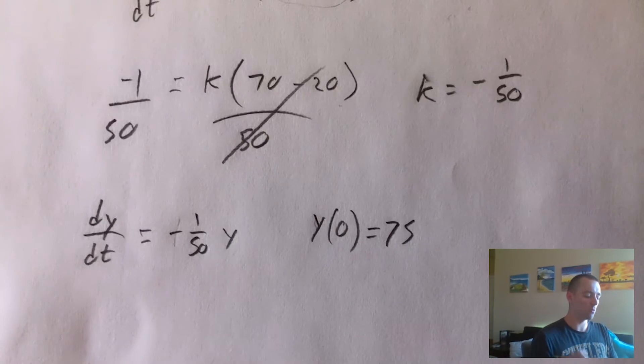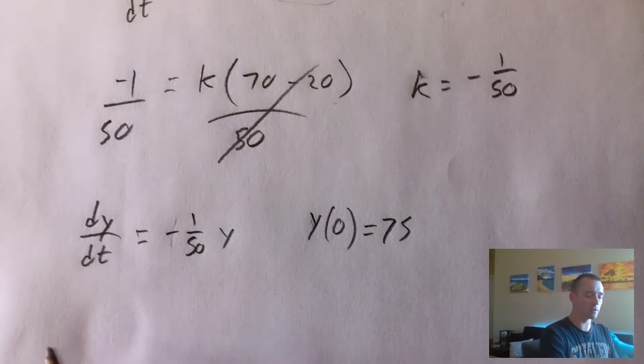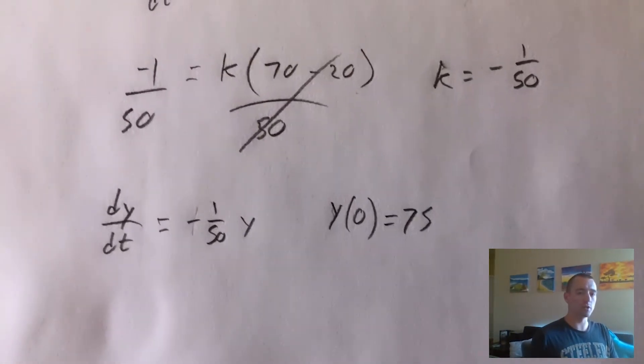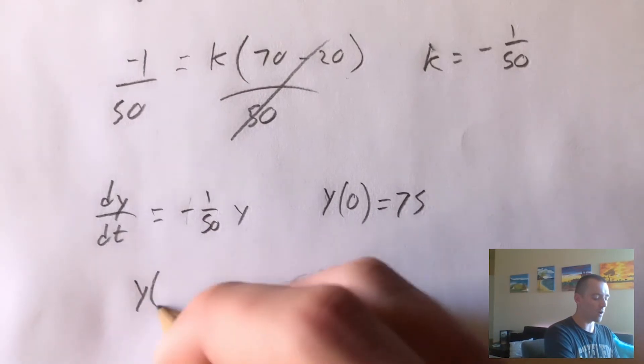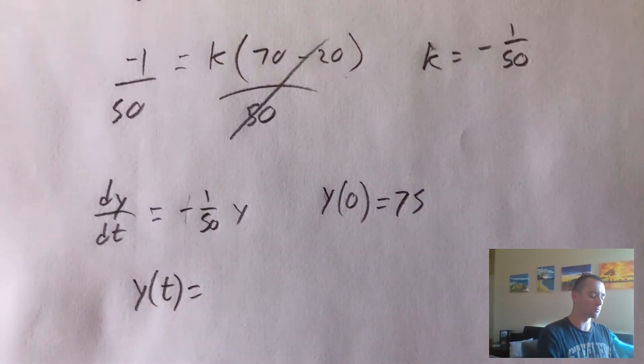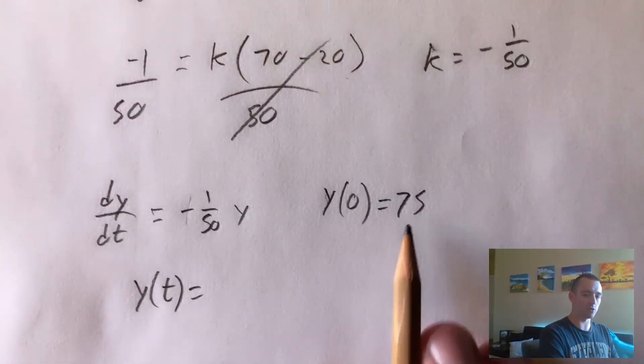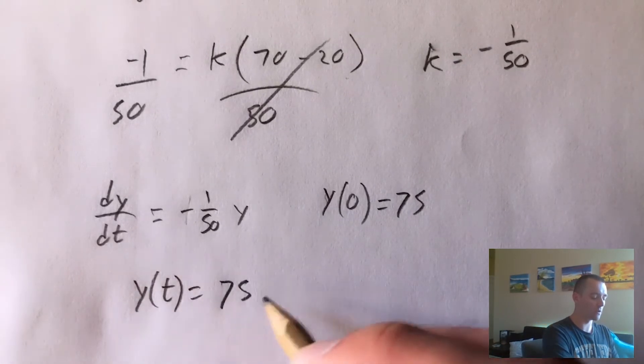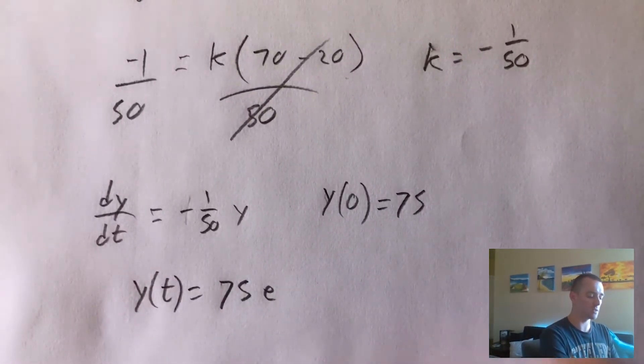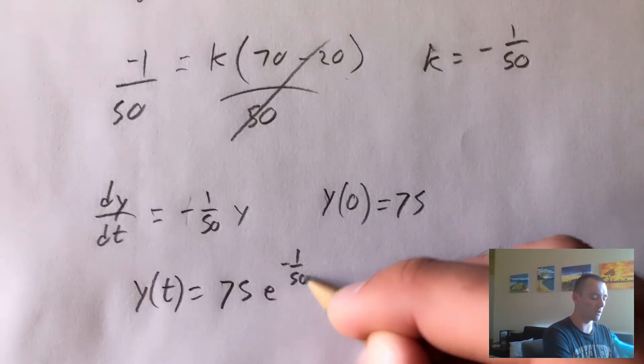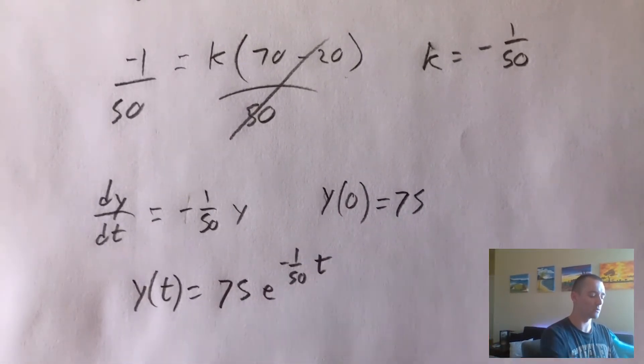So now, based on this initial value problem, we actually know based on another formula that's on my integral calculus cheat sheet, that the solution to this initial value problem is Y(t) equals our initial Y value, so 75, times e to the Kt. Well, K is negative 1/50, so e to the negative 1/50 times t.